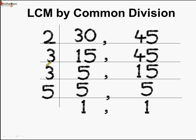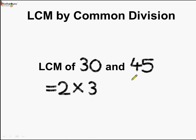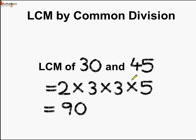All the divisors are prime numbers. So what is the LCM of 30 and 45? The LCM is equal to 2 multiplied by 3 multiplied by 3 multiplied by 5, which equals 90. This we found using the method of common division.